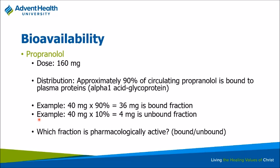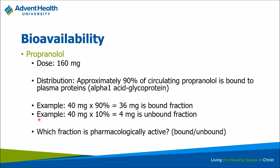Looking at distribution: propranolol is highly lipophilic. One major factor in distribution is serum protein binding. If a drug is bound to a serum protein like albumin or alpha-1 acid glycoprotein, it can't go out into the tissues — it's sequestered on those proteins. Propranolol is about 90% bound to alpha-1 acid glycoprotein, which affects the volume of distribution. That means 90% is held in central circulation, while the other 10% — just 4 mg — is available to go out into tissues.